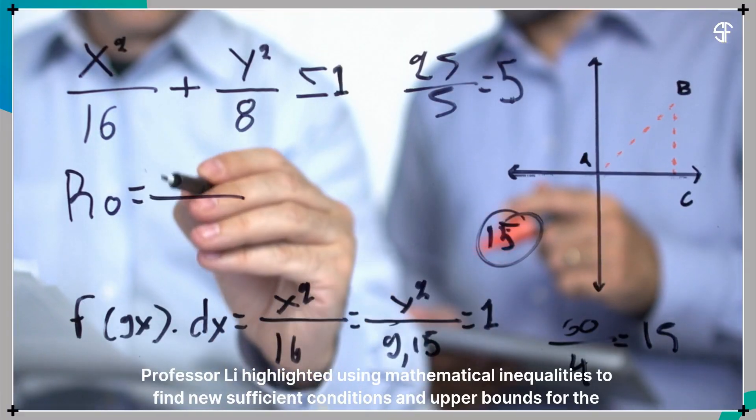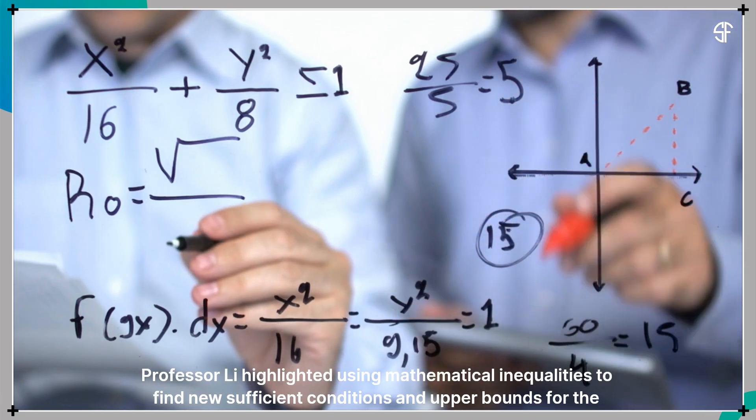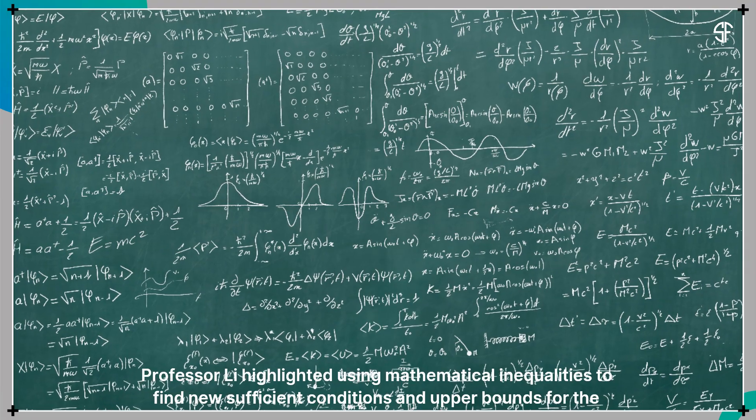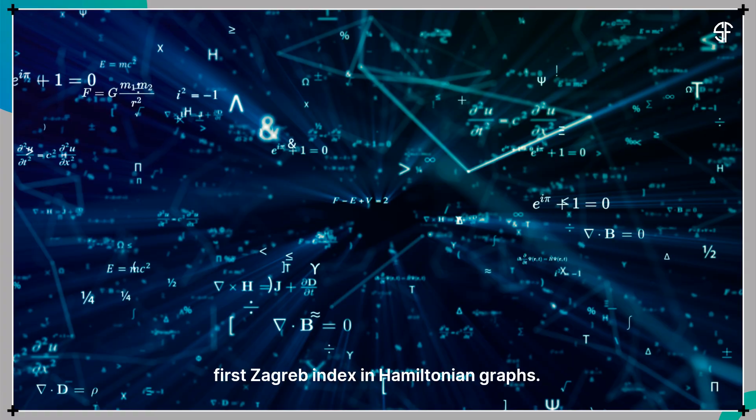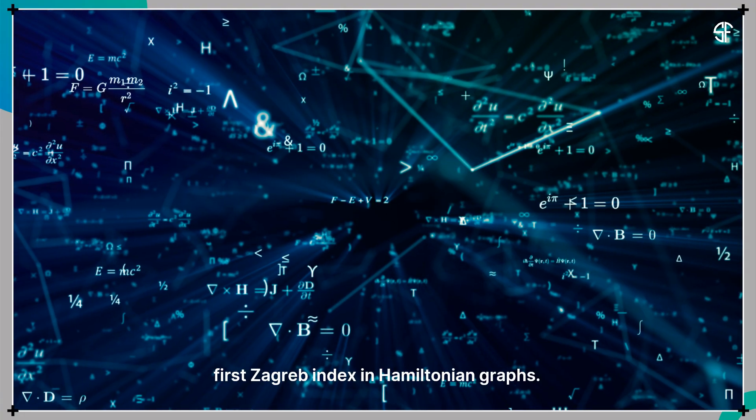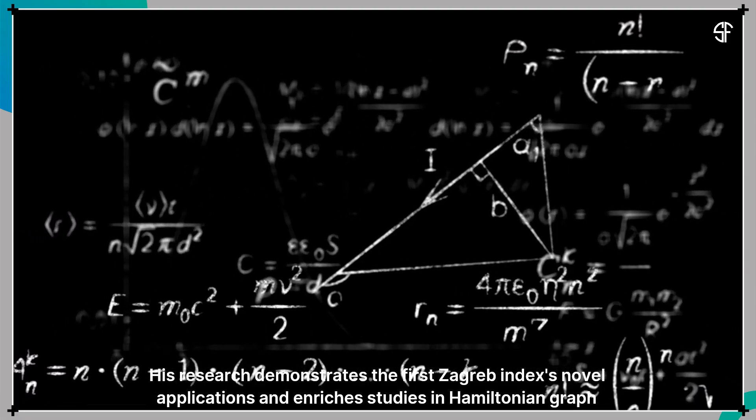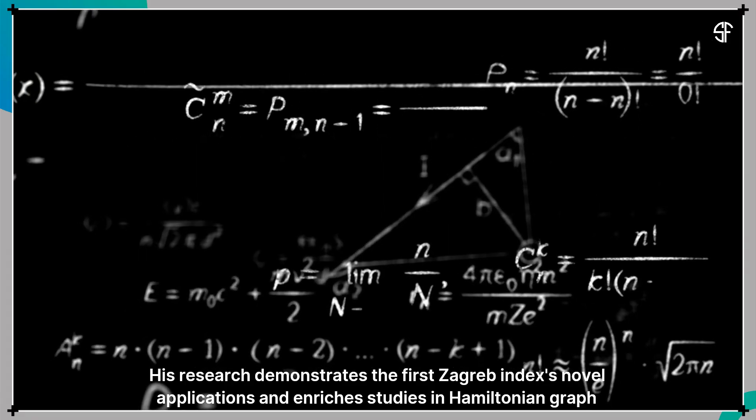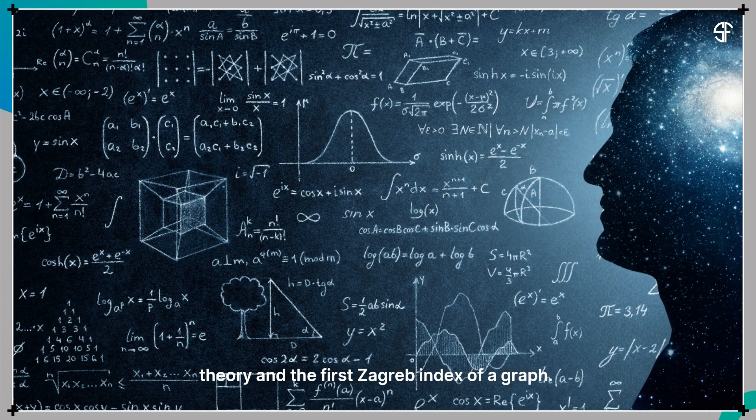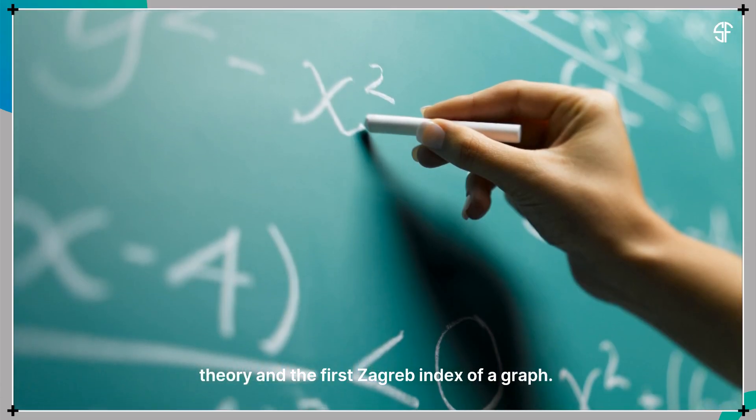Professor Lee highlighted using mathematical inequalities to find new sufficient conditions and upper bounds for the first Zagreb Index in Hamiltonian graphs. His research demonstrates the first Zagreb Index's novel applications and enriches studies in Hamiltonian graph theory and the first Zagreb Index of a graph.